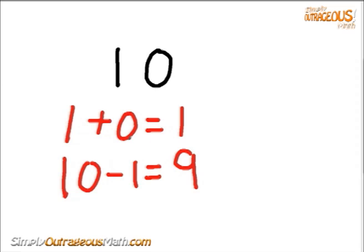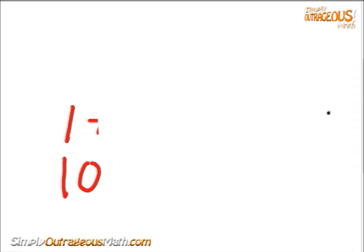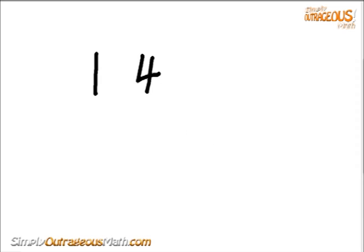So go back through that again. The number 10 is made up of 1 and a 0. 1 plus 0 equals 1. Then we subtract the original number, which is 10 minus 1, and that equals 9. Now let's try a slightly larger number, and in this problem we're going to look at the number 14.